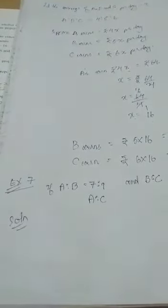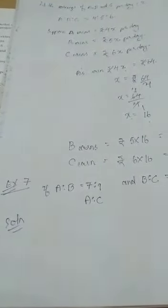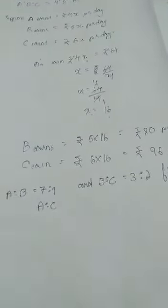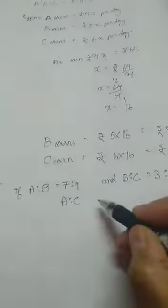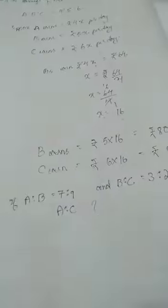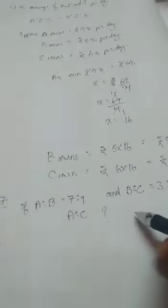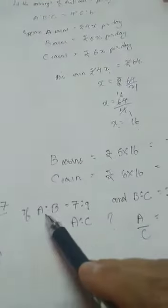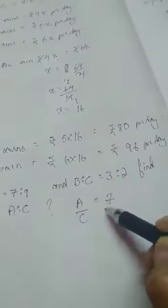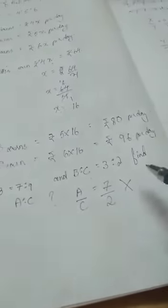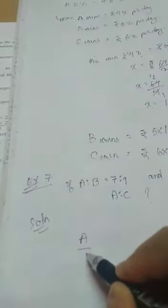Now this is example number 7 of your textbook. That is, if A:B = 7:9 and B:C = 3:2, find A:C. We have to find the ratio A:C. How are we going to find out? Many of you will be writing, you all may think that A:C, your A is 7 and C is 2. This is wrong. You should not do this way.